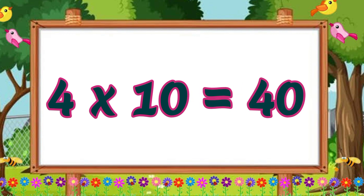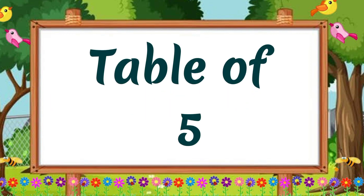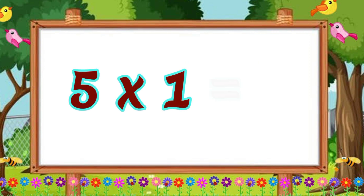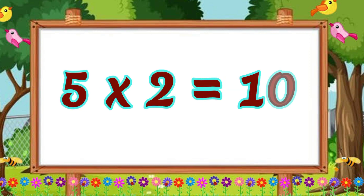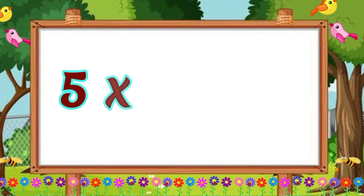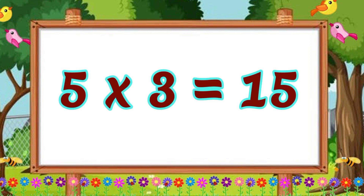Four eights are thirty-two. Four eights are thirty-two. Four nines are thirty-six. Four nines are thirty-six. Four tens are forty. Four tens are forty. Table of five. Five ones are five. Five ones are five. Five twos are ten. Five twos are ten. Five threes are fifteen. Five threes are fifteen.